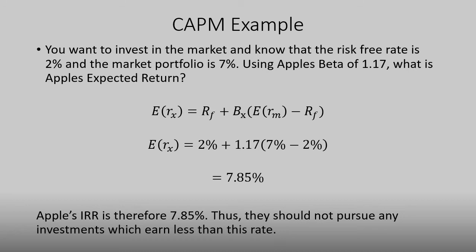This tells us that our cost of capital and cost of equity is going to be 7.85%. It also tells us that our IRR is 7.85%, meaning that Apple's management should not take on any projects that offer a return less than this rate — because if they do, they're ultimately hurting their shareholders' value.